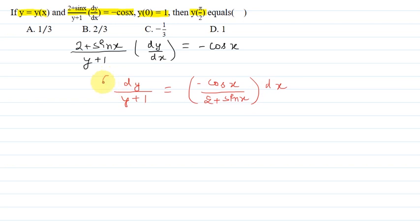We now integrate both sides. The left-hand side integral is 1/(y + 1) dy, and the right-hand side integral is -cos x / (2 + sin x) dx.